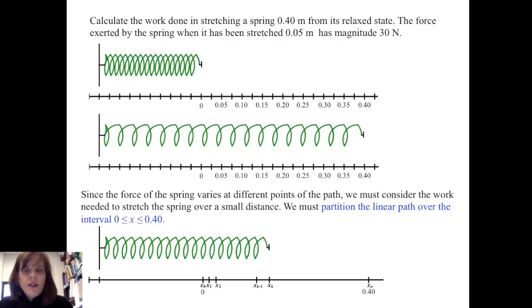Since the force of the spring varies at different points of the path, we must consider the work needed to stretch the spring over a small distance. We partition the linear path over the interval from x going from zero to 0.4. And here we see where we've partitioned the interval from zero to 0.4.